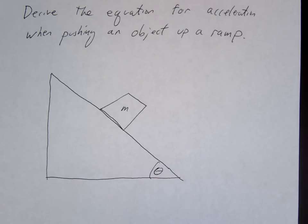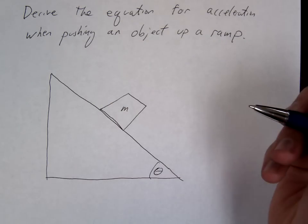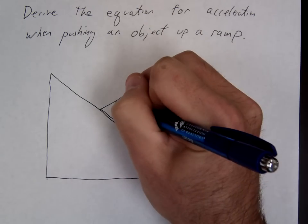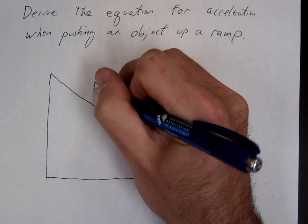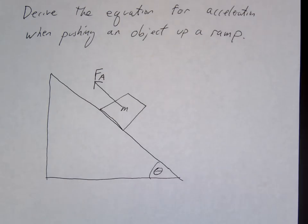So our first step always should be to draw our FBDs. So first of all, what direction is my applied force? Up the ramp, right? We just set it. So let's apply our force up the ramp. We'll call it FA. Any other forces acting on the mass? Friction.